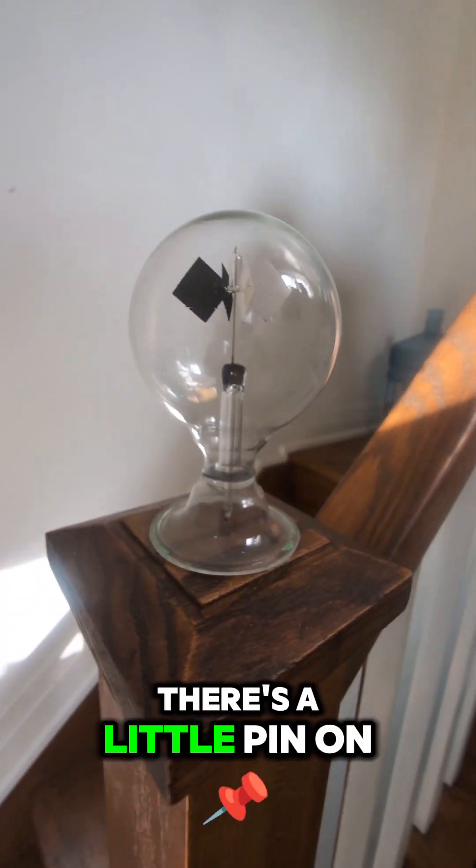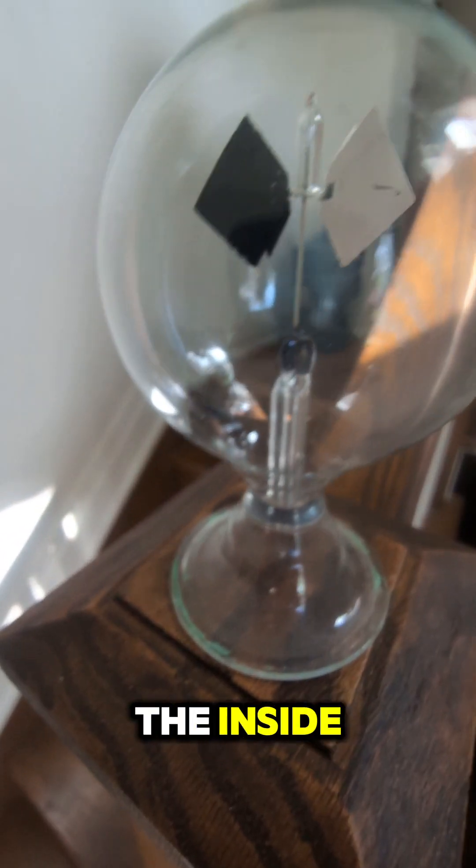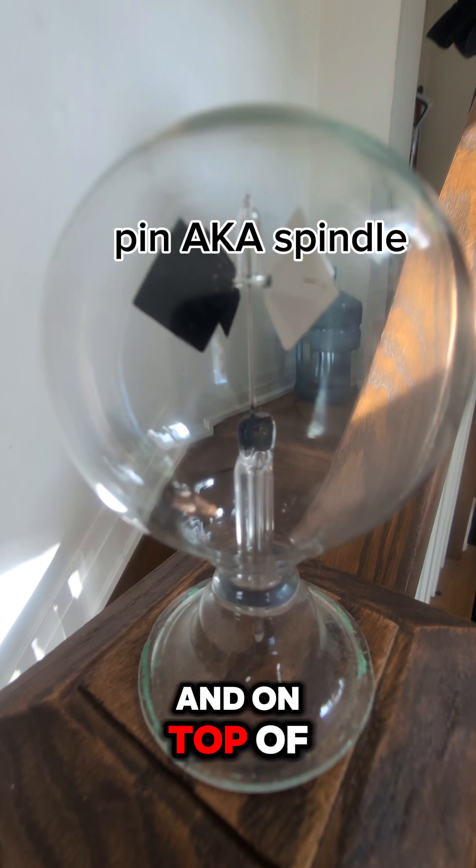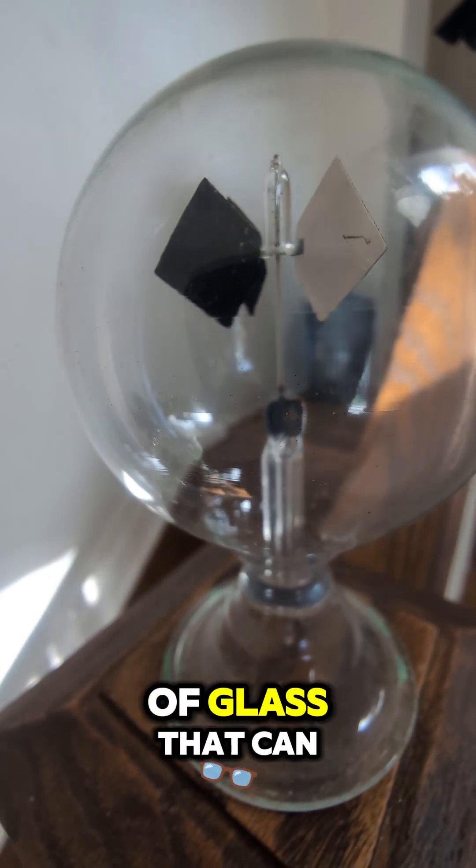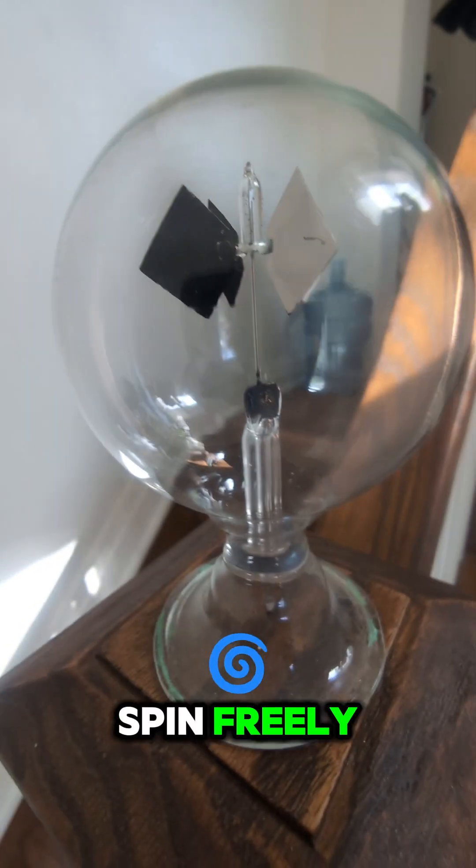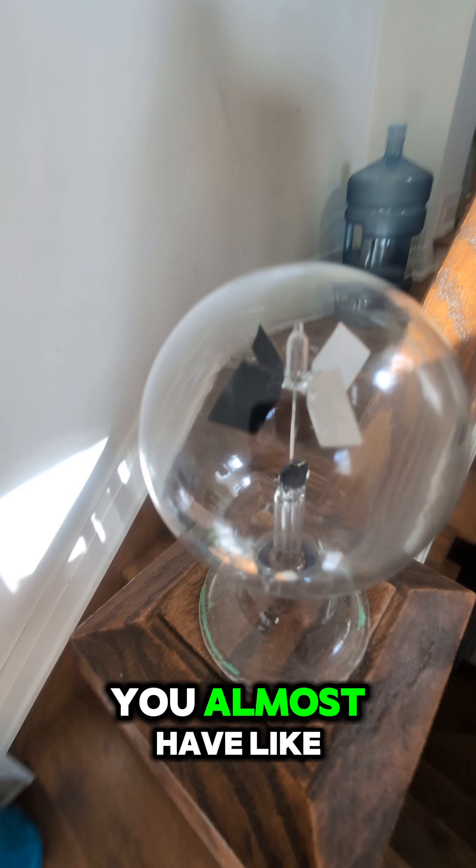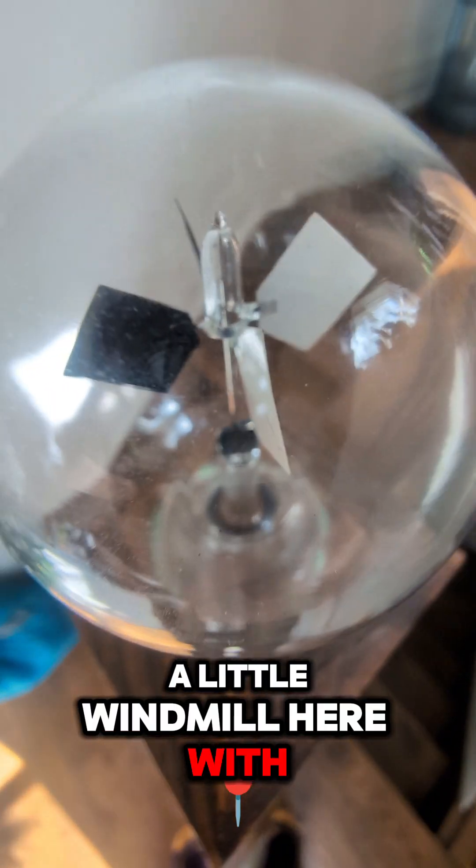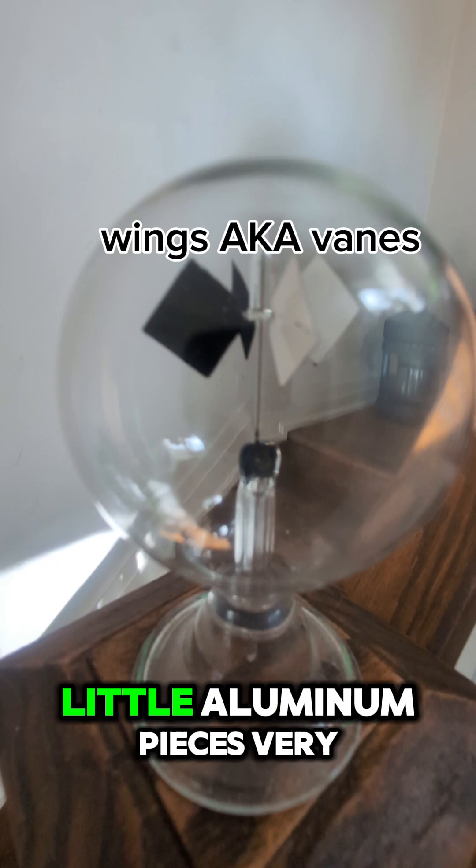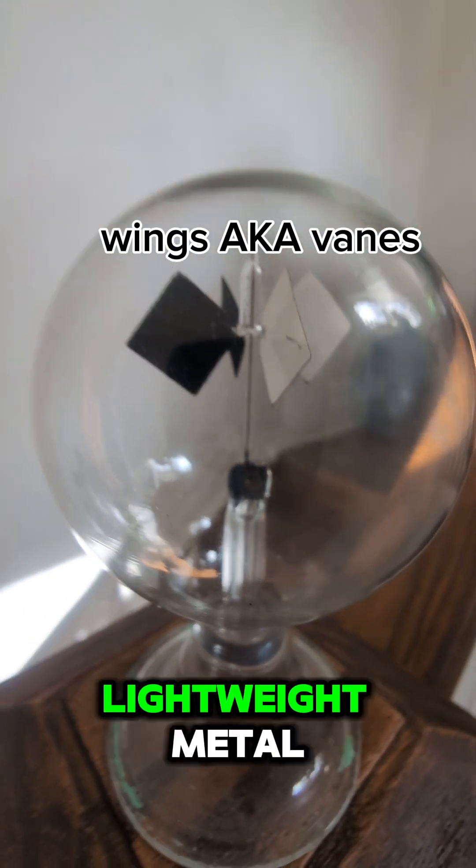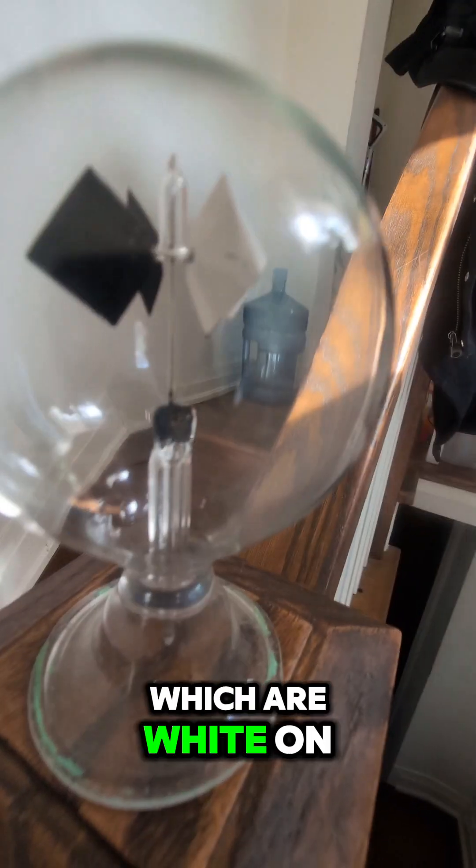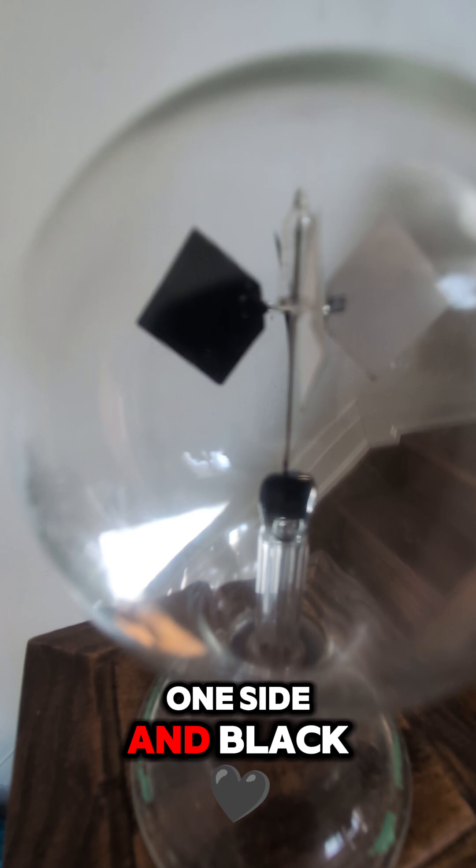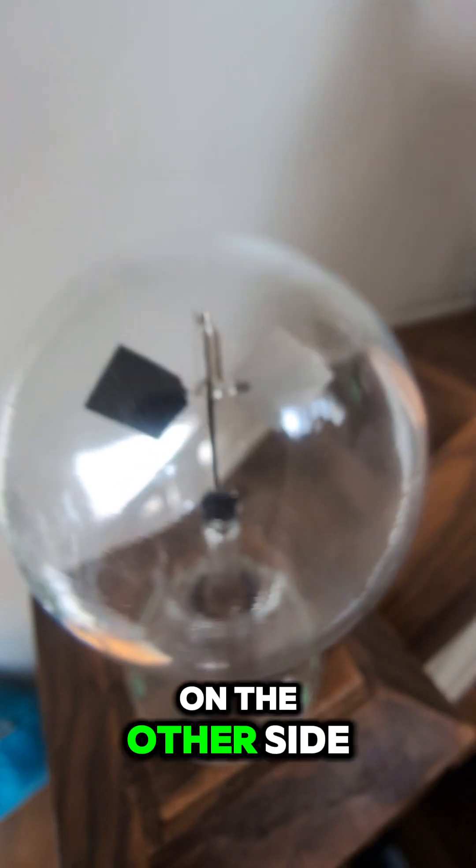So you can see there's a little pin on the inside and on top of that is a piece of glass that can spin freely and you can see you almost have like a little windmill here with four wings, little aluminum pieces, very lightweight metal, which are white on one side and black on the other side.